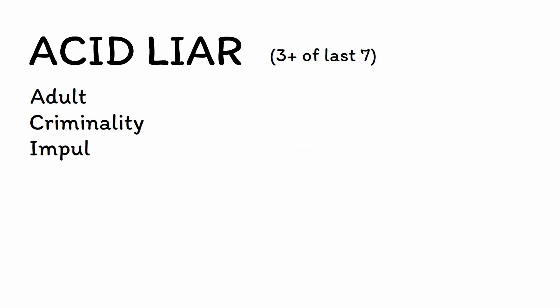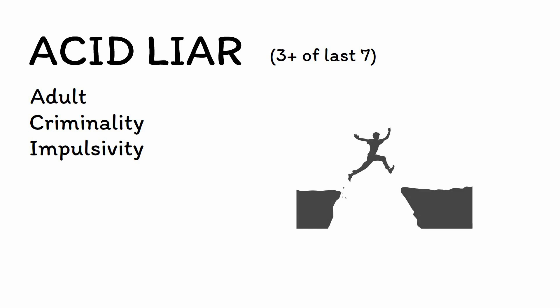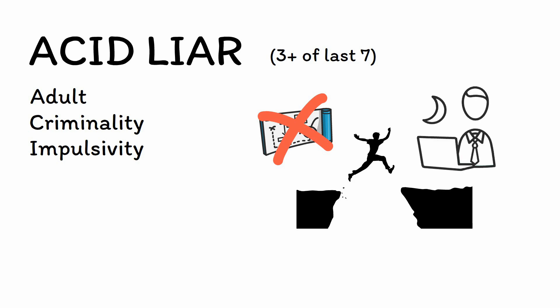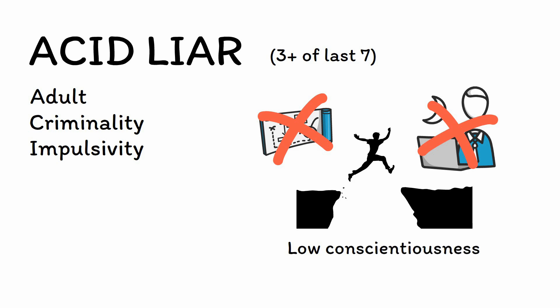I is for impulsivity. People with ASPD tend to be highly impulsive and will often act on a whim without considering the consequences of their actions. This is accompanied by a general failure to engage in purposeful or planned behavior, which makes things like having a job or finishing school very difficult. ASPD is correlated with low conscientiousness in the Big Five personality traits.